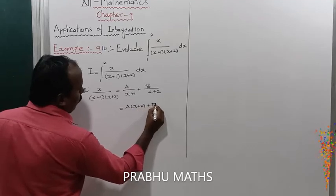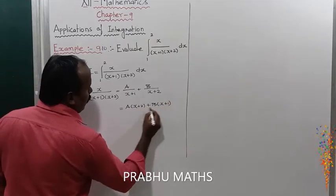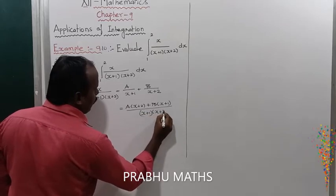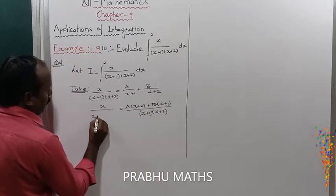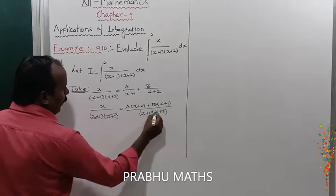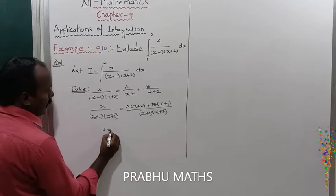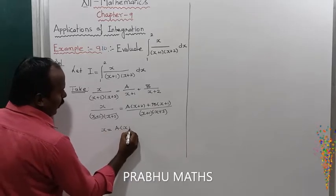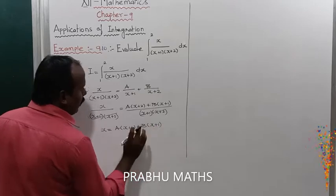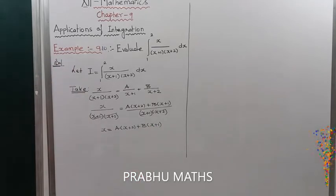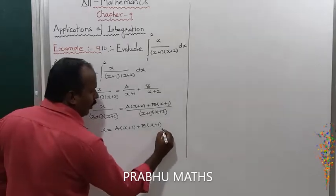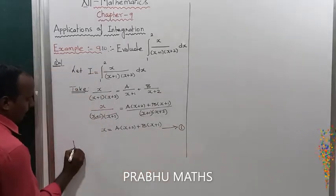So A(x+2) plus B(x+1), the whole divided by (x+1)(x+2). Now x divided by (x+1)(x+2) — denominators cancel — so x equals A(x+2) plus B(x+1). Call this equation number 1.